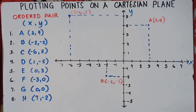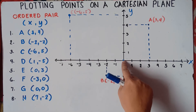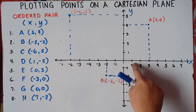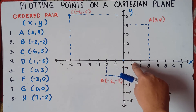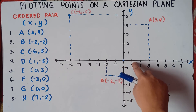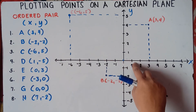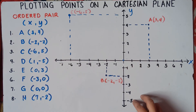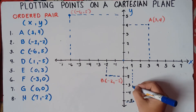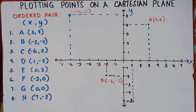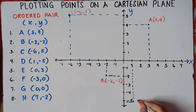For point D, we have (1, -5). Starting from the origin, x is positive 1 so move 1 unit to the right. Then y is negative 5, so move 5 units downward — 1, 2, 3, 4, 5. Make broken lines to guide you, and label the point: D is (1, -5).